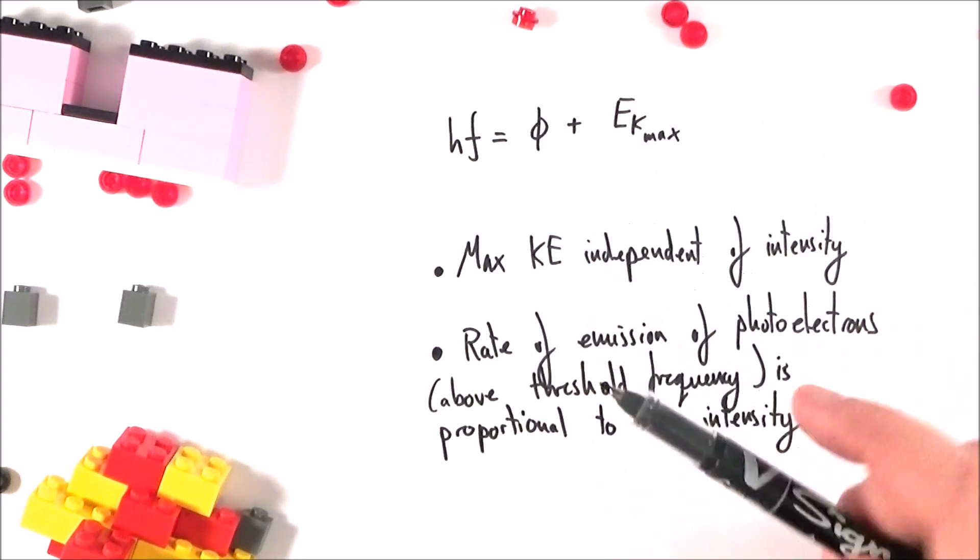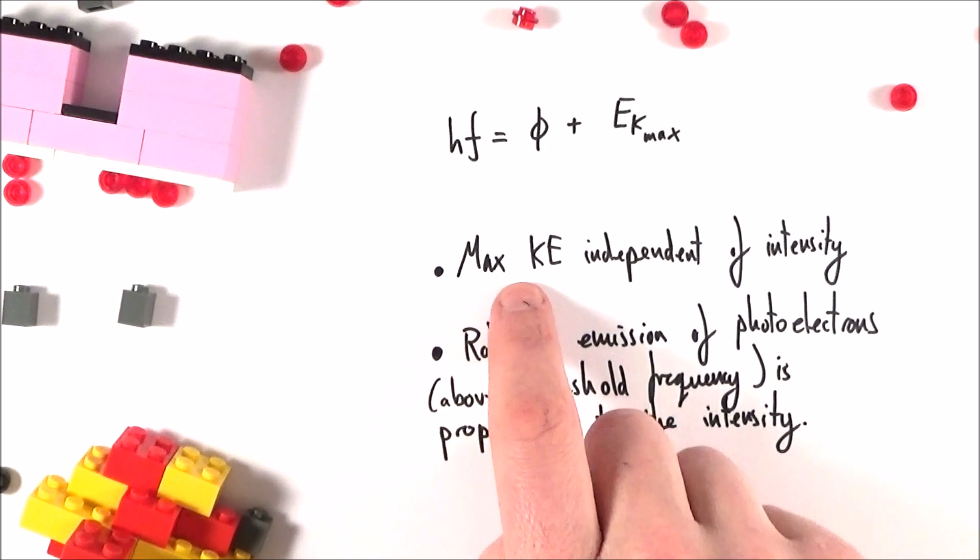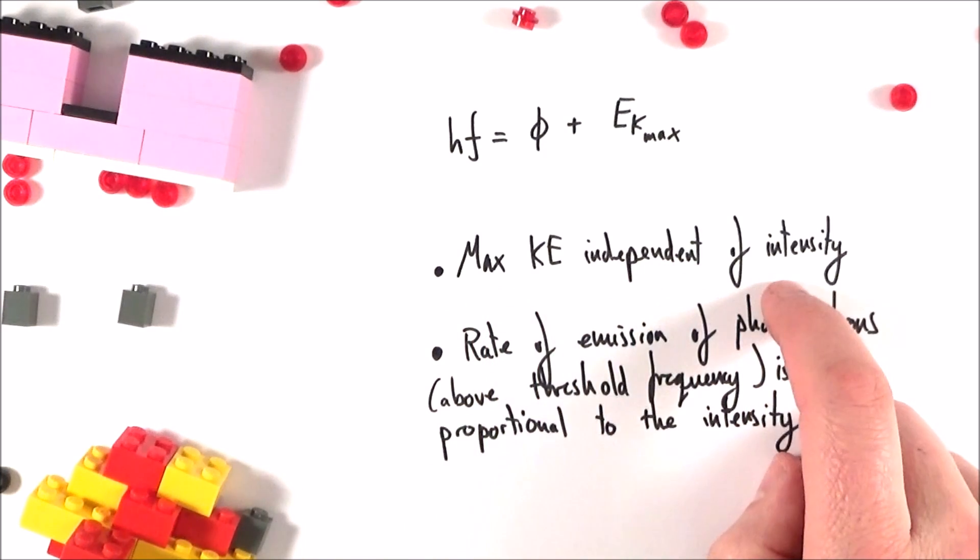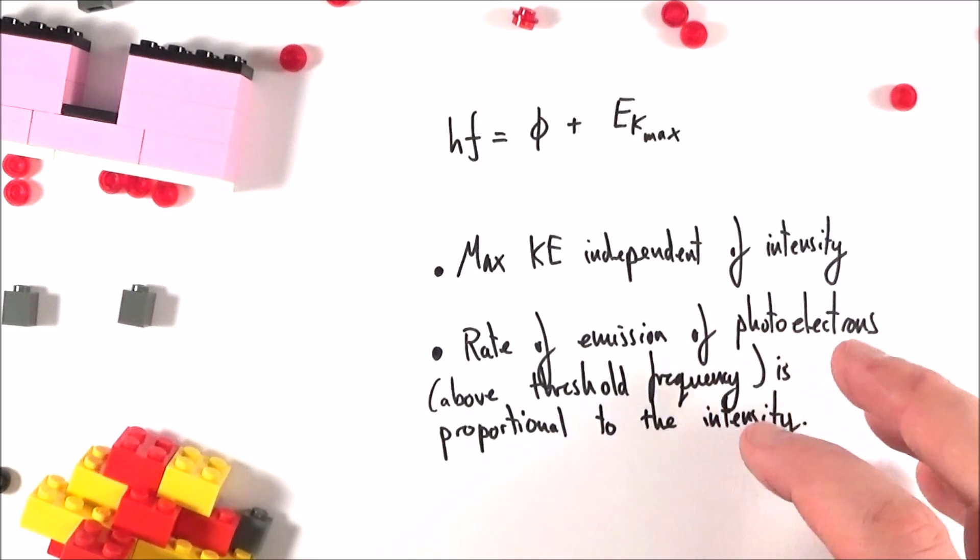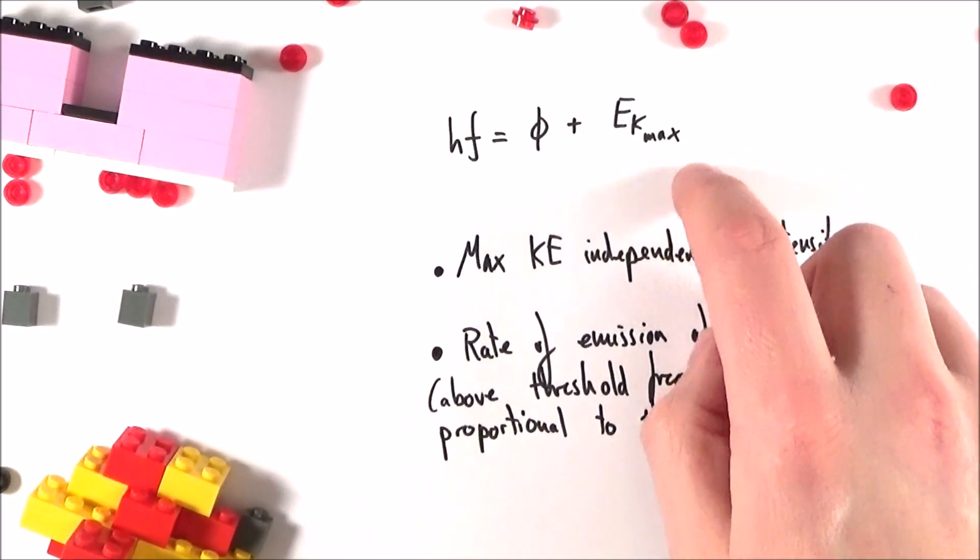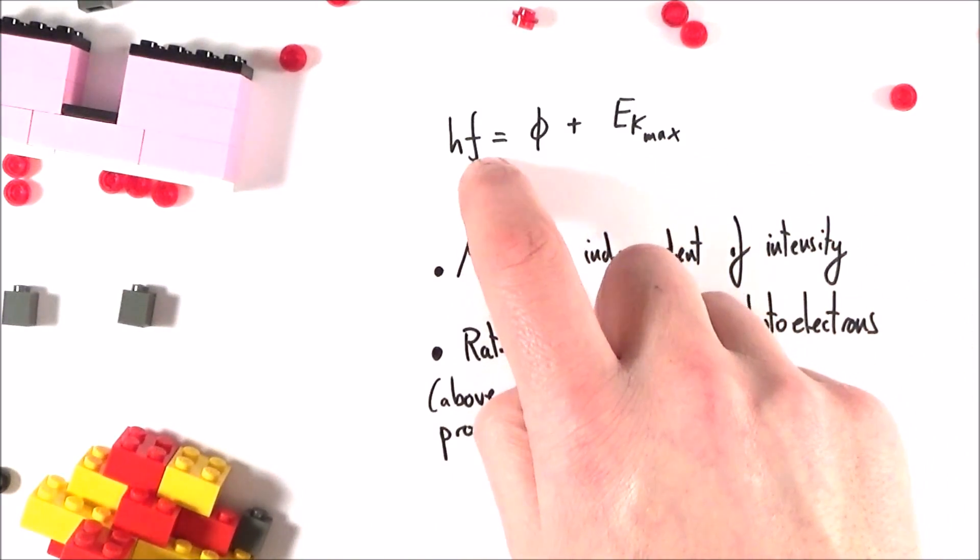There are two things that come from this. First of all, the maximum kinetic energy is independent of the intensity. So it doesn't matter how many things you have coming in, that doesn't affect the kinetic energy. What does affect it is the frequency of that radiation.